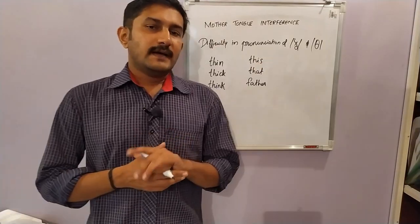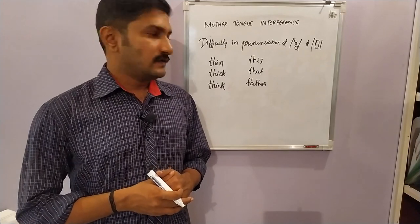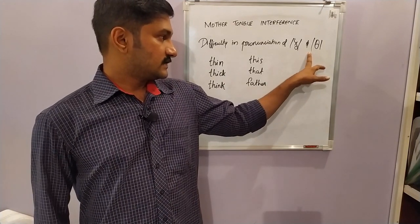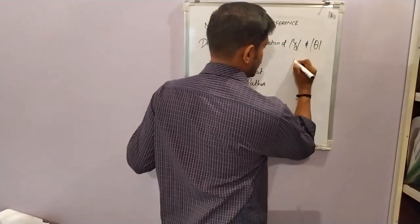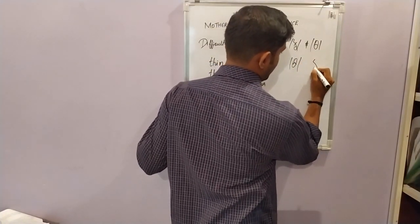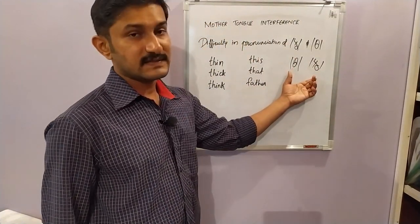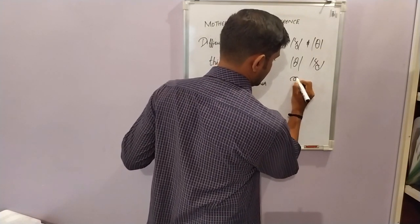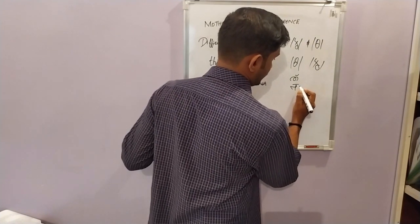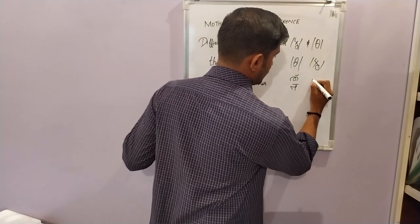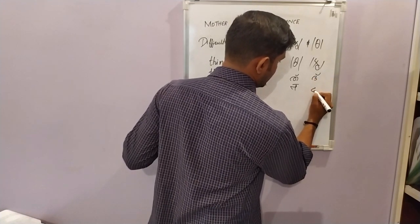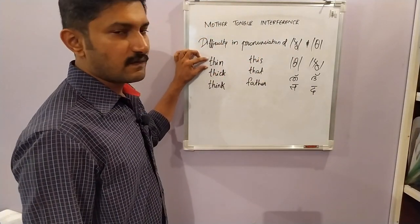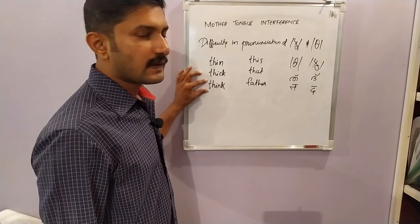Coming to mispronunciations in the case of consonants, almost all Indian learners have difficulty pronouncing the 'th' sounds — both the voiceless 'th' and the voiced 'th'. We tend to replace them with the nearest equivalent from our mother tongue. In Malayalam it is one sound, in Hindi it is 'ta'. It is to be pronounced as 'thin', 'thick', 'thing'. It is not a plosive — it is a fricative sound. The tip of the tongue comes very close to the upper teeth without touching it.